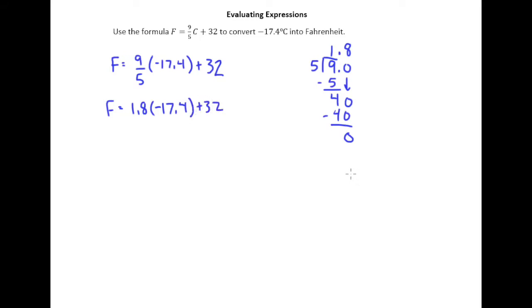So now let's go ahead and multiply 1.8 and negative 17.4. And just so I don't forget, let's just note right now that the result of that multiplication will be negative. So 8 times 4 is 32. 7 times 8 is 56 plus 3 is 59. 8 times 1 is 8 plus 5 is 13.